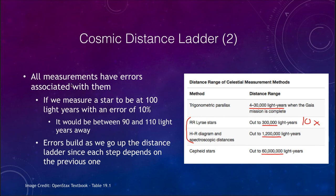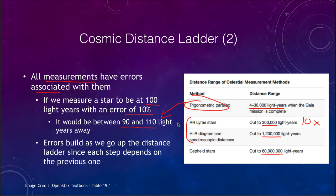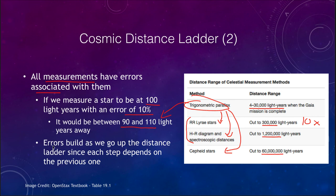One of the problems is that any measurement we make has an error associated with it. For example, if we measure a star to be 100 light years, there might be an error of 10%, which is a decent error for determining distances — though in many cases it can be much larger. That would mean the star is between 90 and 110 light years away. If this is determined by trigonometric parallax, and we then use that to calibrate RR Lyrae stars, spectroscopic parallax, and Cepheid variable stars, any small errors here will lead to errors in distances determined by those other methods, and will continue building on up through the distance ladder, because each step depends on the previous step.